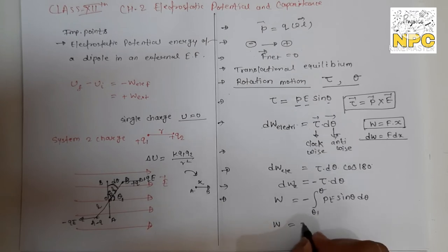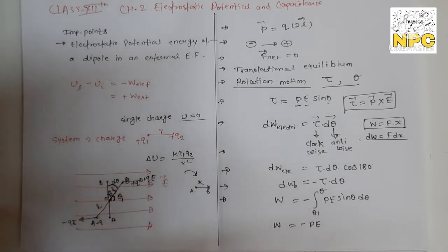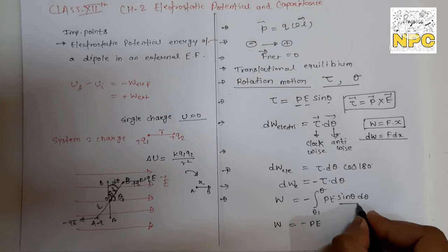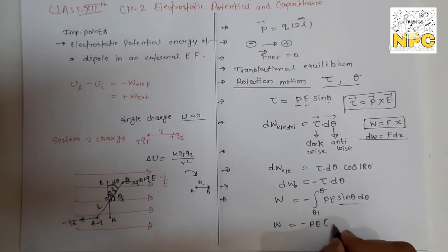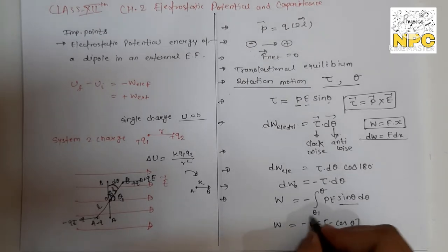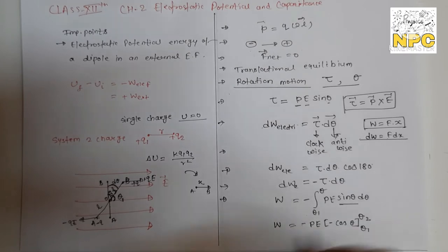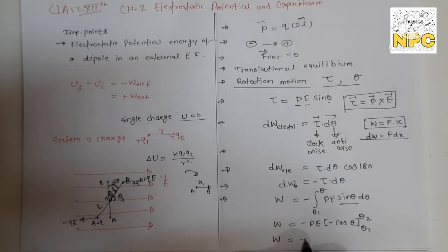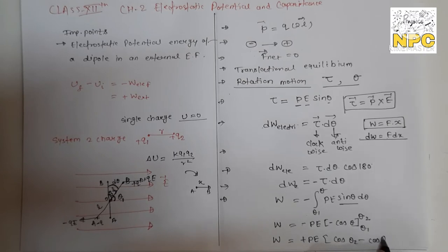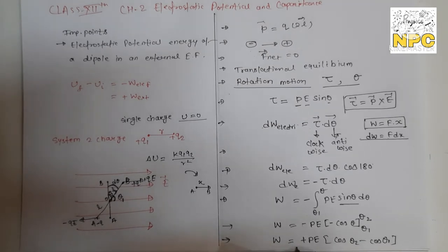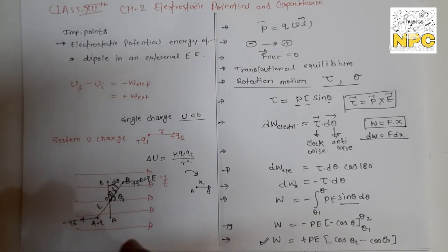So W = PE(cosθ₂ − cosθ₁). This work done is stored in the form of electrostatic potential energy. The change in electrostatic potential energy equals the negative work done by the electric force.